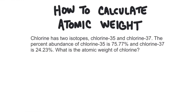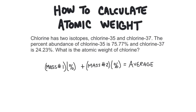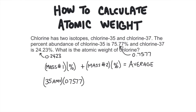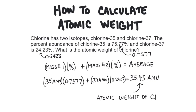Weighted averages work like this: multiply the mass of the first isotope by its percentage, then multiply the mass of the second isotope by its percentage, and add the two answers together. When you multiply by a percentage, you need to use the decimal form, so you divide the percentage by 100. So: 35 amu times 0.7577, plus 37 amu times 0.2423, and we get 35.45 amu. So 35.45 is the weighted average — in other words, the atomic weight of chlorine.